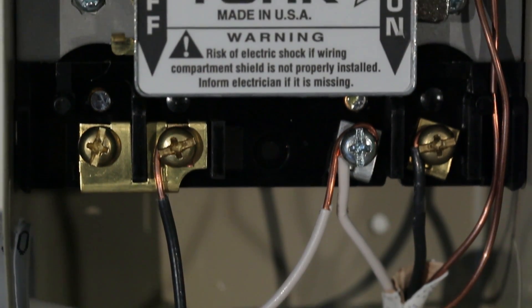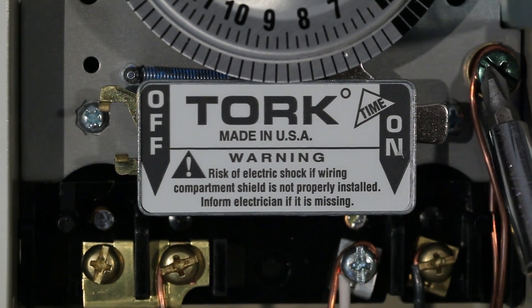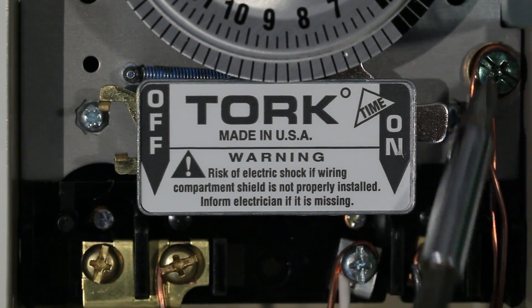Connect the ground wires from both the supply side and the switch side to the green grounding screw here and tuck them into the channel away from the other wires.